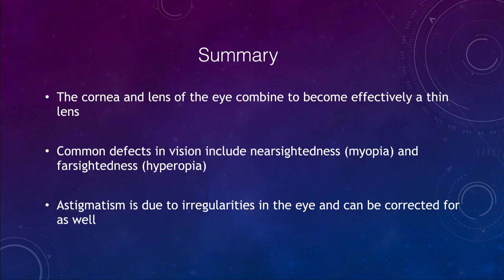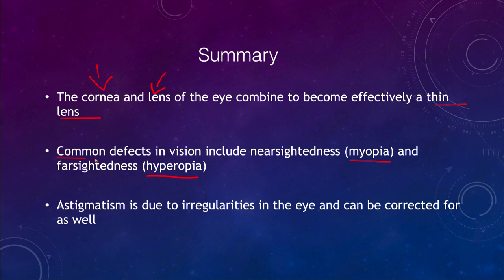In summary, we have a thin lens in our eye made by the cornea and the lens together. We looked at myopia — nearsightedness — and hyperopia — farsightedness — as very common defects in vision. If you need glasses or contacts, you're correcting for either nearsightedness or farsightedness. We also looked at astigmatism, which is caused by irregularities in the eye and can be corrected as well. Your glasses may be correcting for multiple things at once.